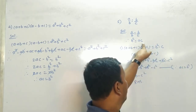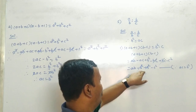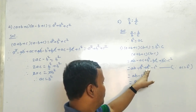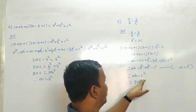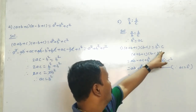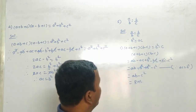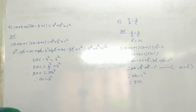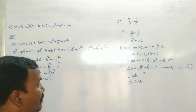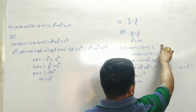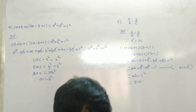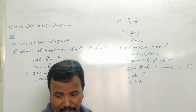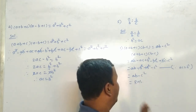Now यह जो AC है, इस AC को हम लोग B square लिख सकते हैं क्योंकि B square is equal to AC। तो AC के जगह B square लिखो, और B square के जगह AC लिखो। तो B square plus B square minus C square बनता है। Again minus plus cut होंगे, तो AB minus C square। And that is our RHS — AB minus C square। यह हमें proof करना था।